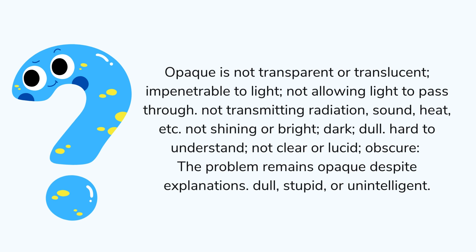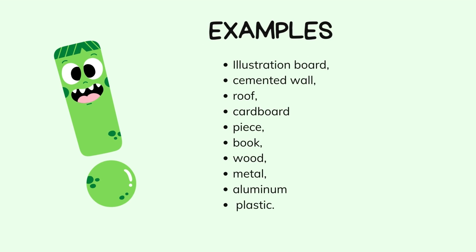Usually, opaque material refers to common materials that are neither metallic nor transparent. So, what do you think will be the example of opaque material? In my opinion, some of the examples are illustration board, cemented wall, roof, cardboard piece, book, wood, metal, aluminum, and some kinds of plastic.